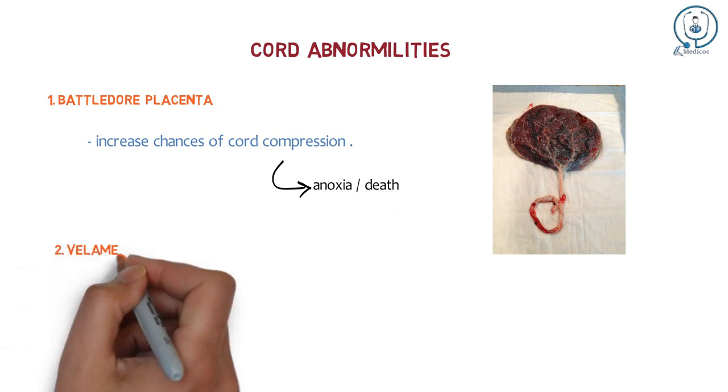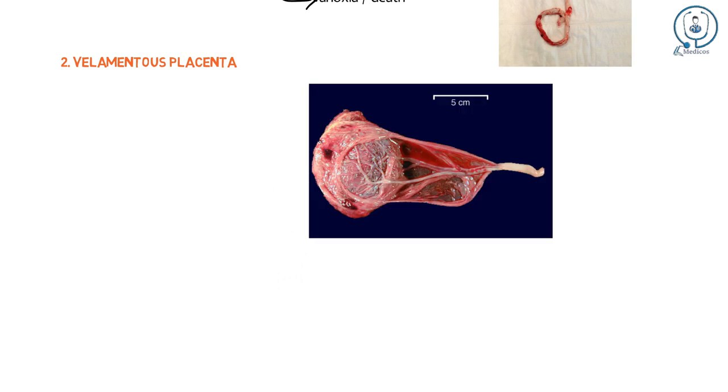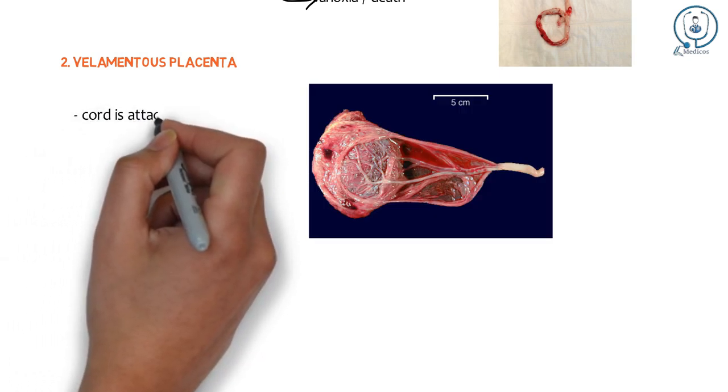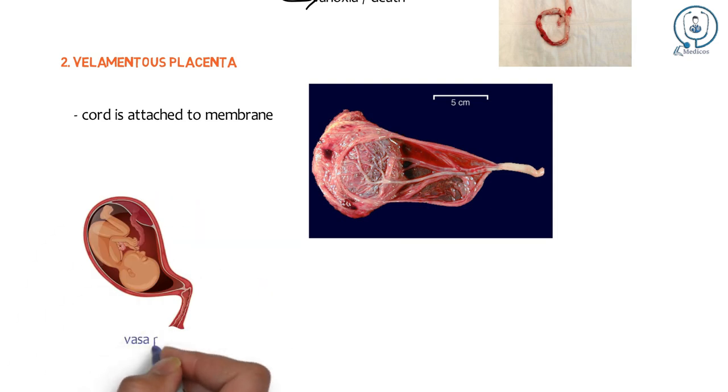Velamentous Placenta: Here the cord is attached to the membranes. The branching vessels traverse between the membranes before they reach the placenta. In a condition known as Vasa Previa, the blood vessels happen to traverse through the membranes overlying the internal os in front of the presenting part.